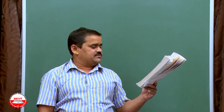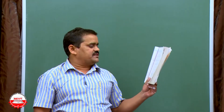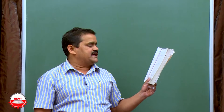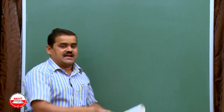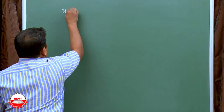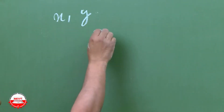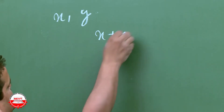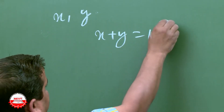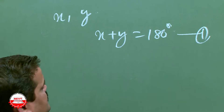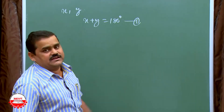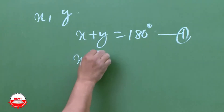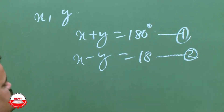The second part: the larger of two supplementary angles exceeds the smaller by 18 degrees. Since supplementary angles add to 180 degrees, that gives equation 1 as X plus Y equals 180, and equation 2 as X minus Y equals 18. You can now solve these two equations.